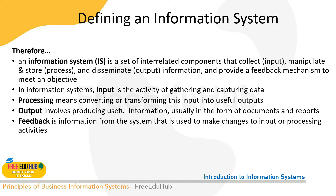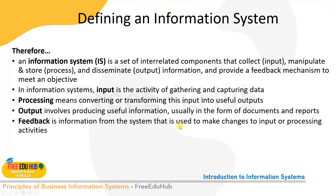Combining system and information: an information system is a set of interrelated components that collect input, manipulate and store data (processing), and disseminate output information, providing a feedback mechanism to meet an objective. It involves gathering and capturing data, processing means converting input into useful output, and output involves producing useful information usually in the form of documents and reports. Feedback is information from the system used to make changes to input, processing, and activities.